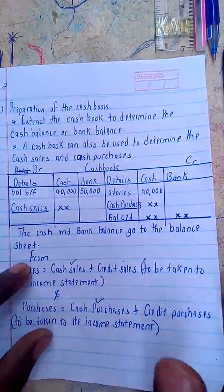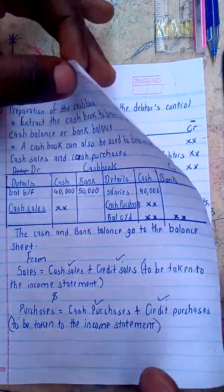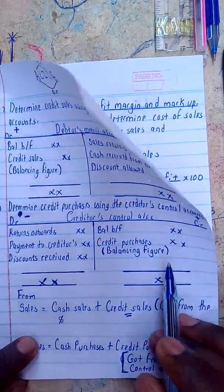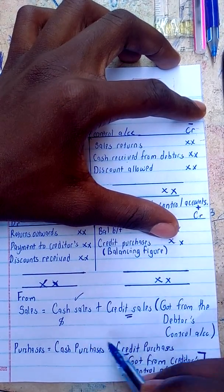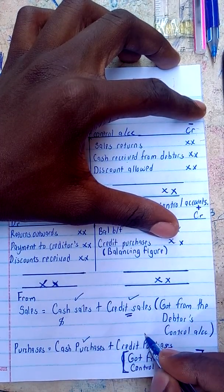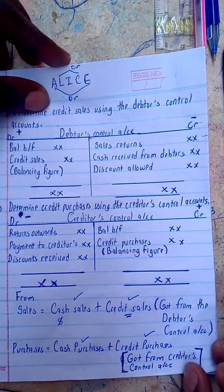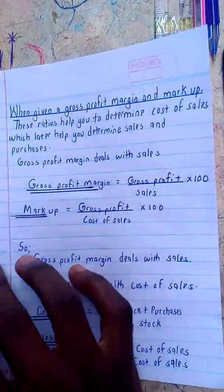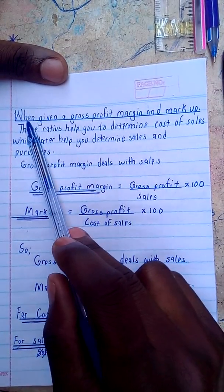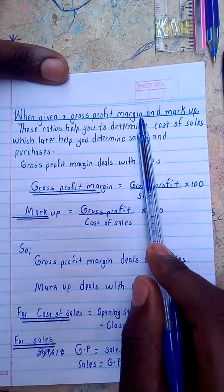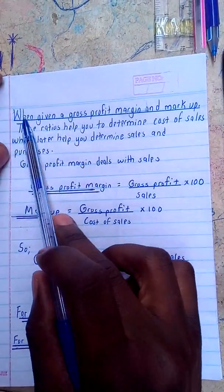That means you can now work out all of this. You have determined the cash sales, cash purchases, credit sales, and credit purchases. You have got the credit sales from the debtors control account and the credit purchases from the creditors control account, and you can find your sales and purchases to take to the income statement. The next topic is going to be determining using a gross profit margin and markup, but let's continue with that in our next video.